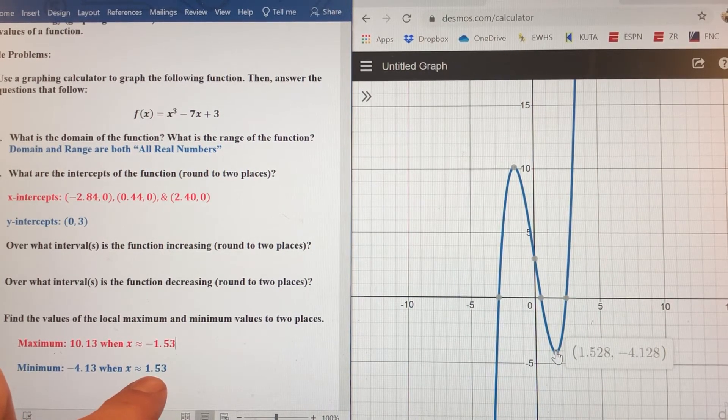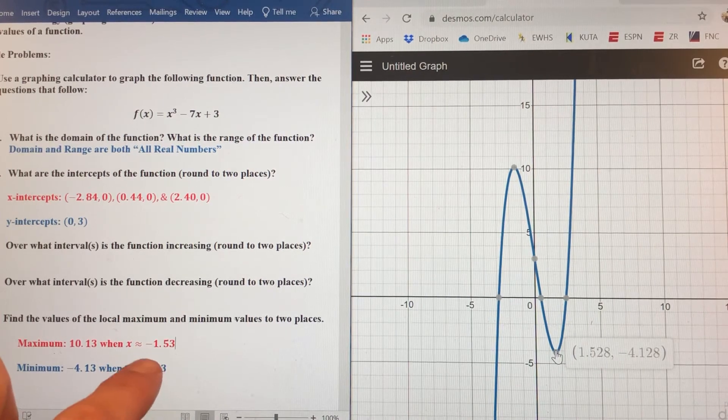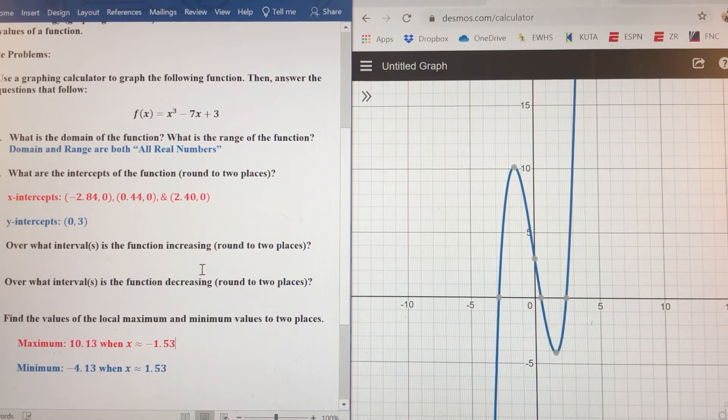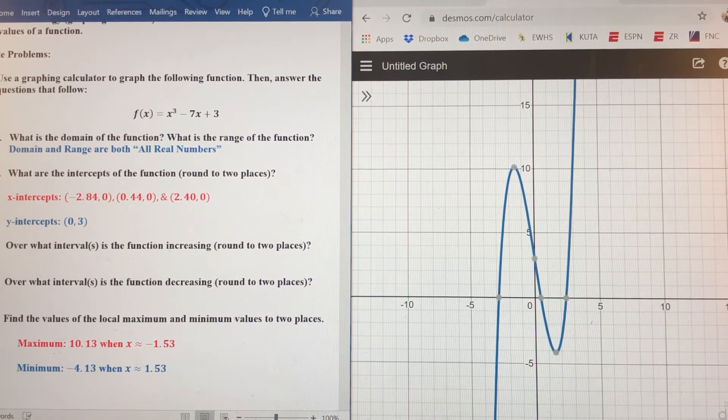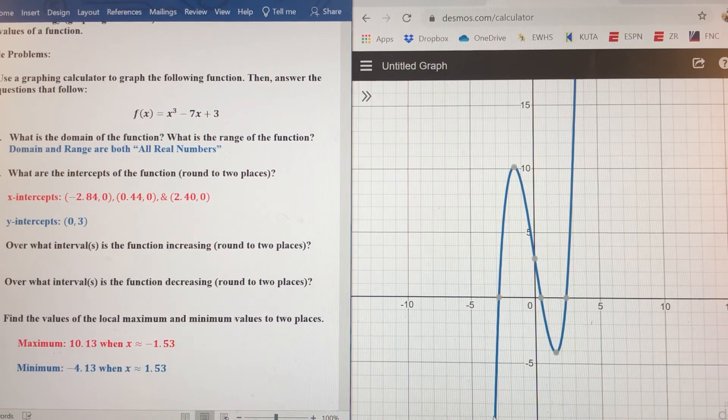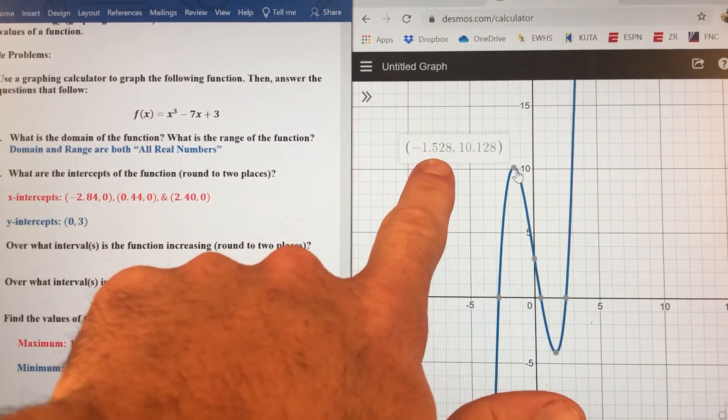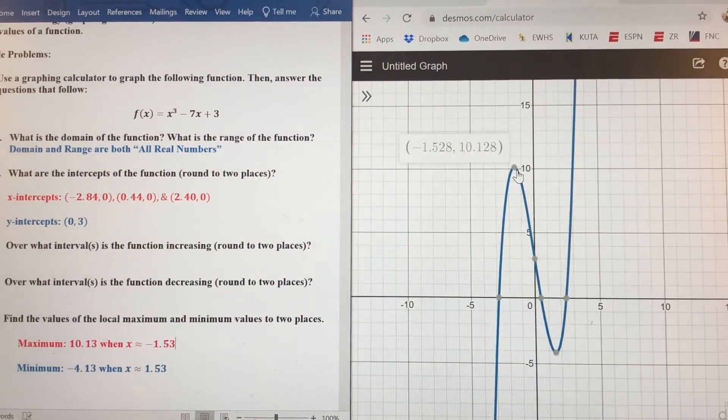Now, the reason I did that first, these x values here are going to be where our intervals for increasing and decreasing change. So let's look at the graph here. This blue part, as we move from left to right, remember, we're getting bigger and bigger and bigger until we get to this negative 1.528 location for x.